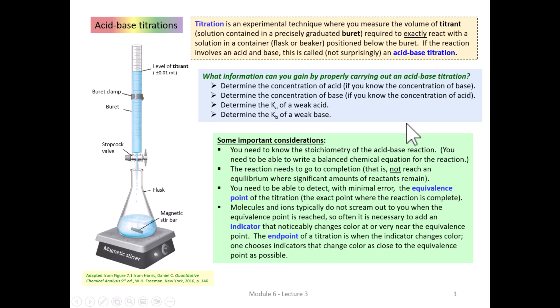Since the molecules and ions involved won't tell you during the experiment, you need to add some sort of indicator that will tell you when the reaction is complete. The indicator will change color, hopefully right at or near the equivalence point. The point at which the indicator changes color is called the endpoint, and you choose an indicator whose endpoint is as close to the equivalence point as possible.